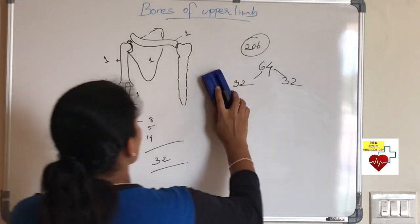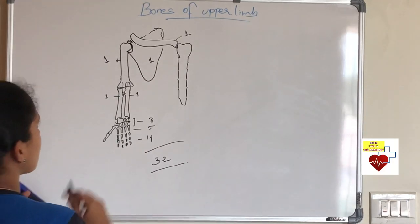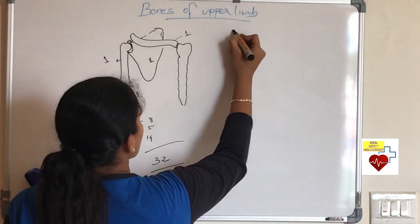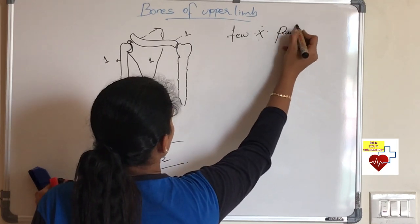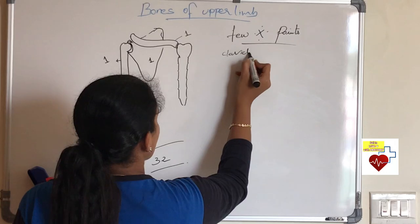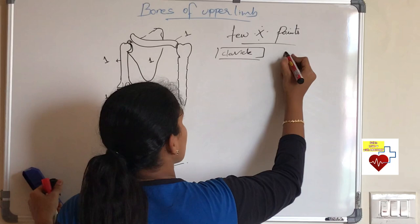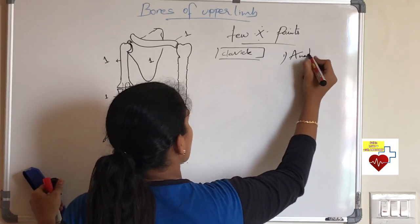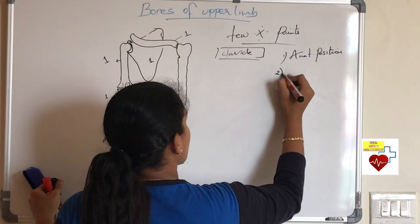You should know the names of all the bones. And what you should know about a bone when you are asked in a viva voce. First you should know how to hold any bone in anatomical position. Next you should talk about side determination.